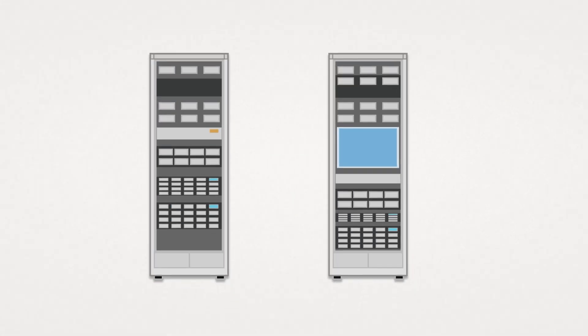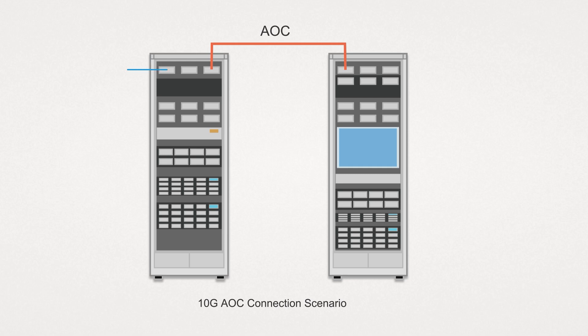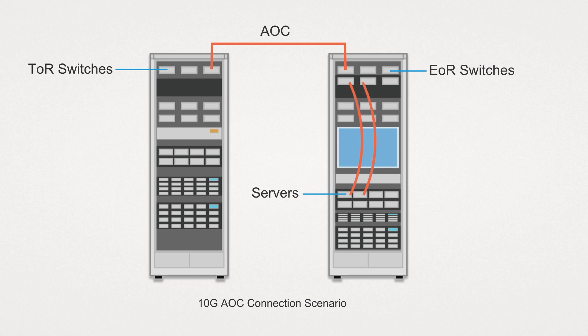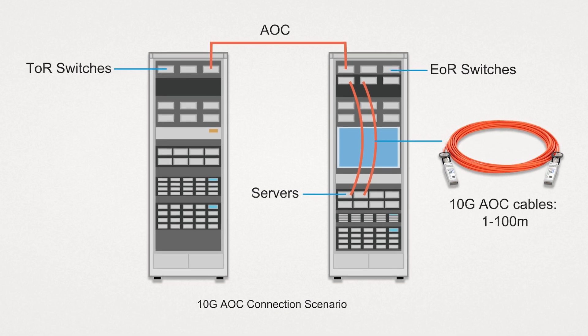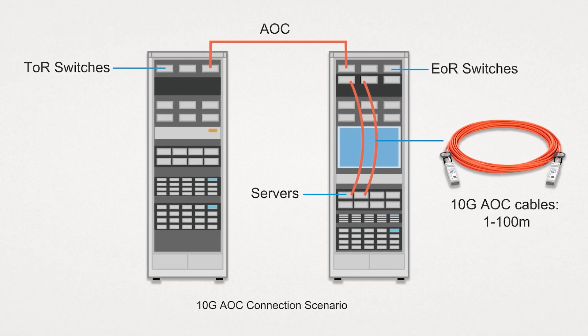AOC cables, such as 10G AOC cables, due to their longer transmission distances, are commonly used in multiple locations within data centers, such as TR, end-of-row EOR, and middle-of-row MOR. Similar to DAC, servers are connected to the top Ethernet switches in the rack, with each server having one or two Ethernet connections to the switch that can be patched using AOC cables.